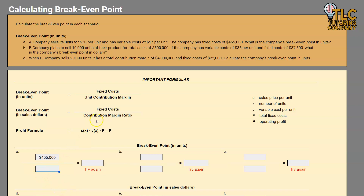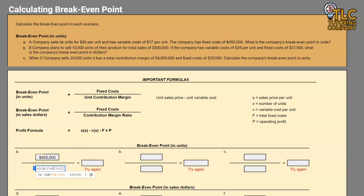For our denominator we need the unit contribution margin, which is our unit sales price minus our unit variable cost. How much do we sell each unit for? $30. What is our variable cost per unit? $17. So our denominator is $30 sales price minus $17 variable cost, giving us $13 for our unit contribution margin.